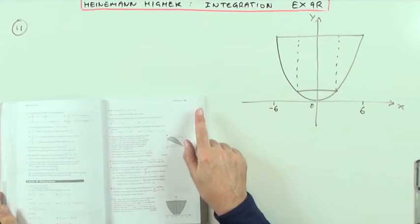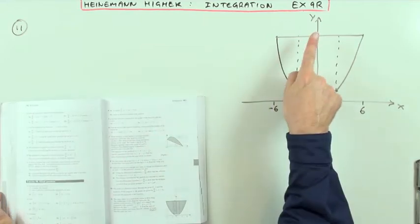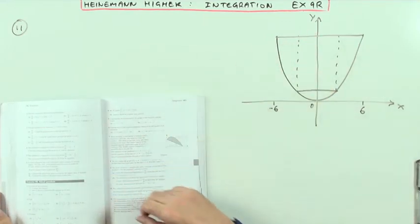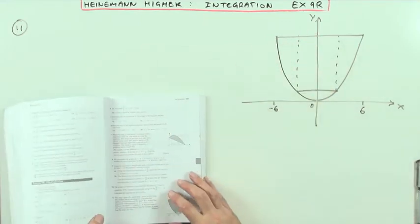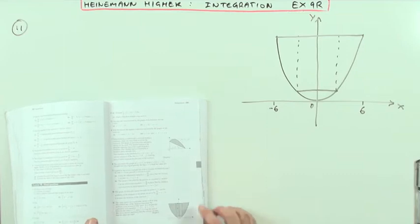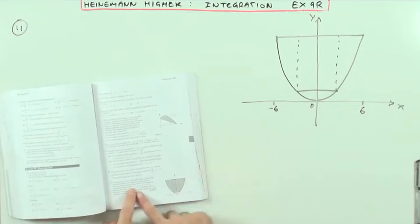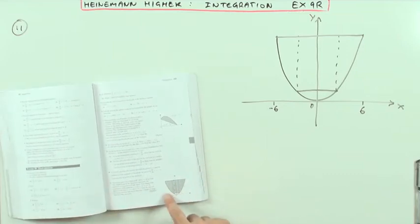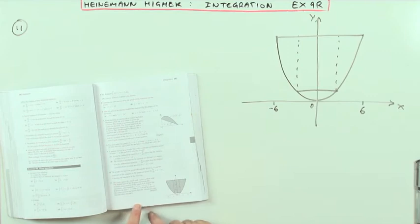Chapter 9 of the mixed questions at the end, number 11 — a former higher question. Another worded one; this time you need to look at the words, it's not just the picture because it gives extra information.